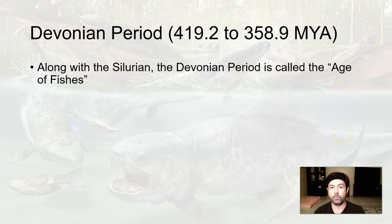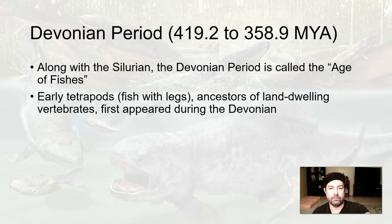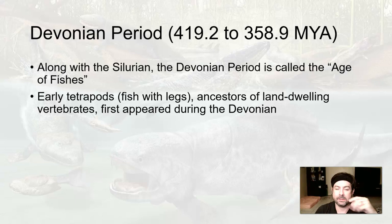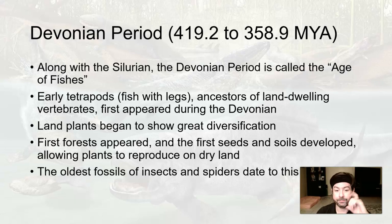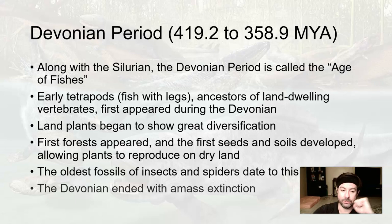Along with the Silurian, the Devonian is called the Age of Fishes. Fish continue to evolve rapidly in the oceans. Early tetrapods — 'tetra' means four, 'pos' means foot — so these are fish with legs, evolved and are the ancestors of all land-dwelling vertebrates. Land plants continue to diversify, the first forests appear, seeds and soil development allowed plants to reproduce on dry land. The oldest fossils of insects and spiders appear during this time. The Devonian ended with a mass extinction — the second one.